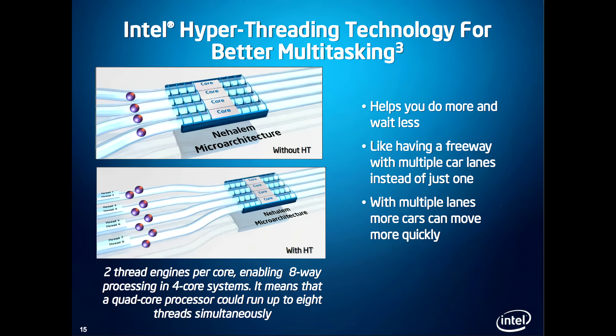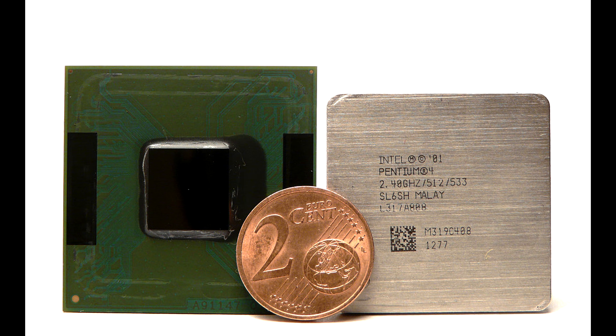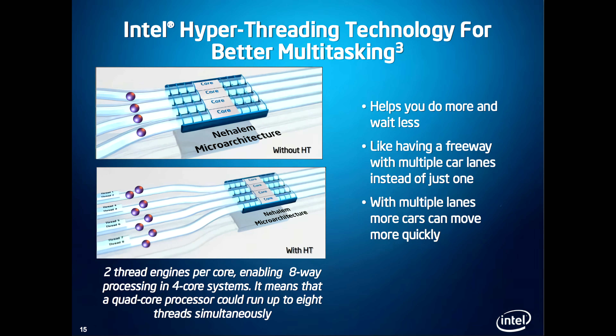Intel's hyper-threading technology has been around for many years. It was first introduced in 2002, making its debut with the Intel Pentium 4 processor, which was part of the Northwood core-based family. However, hyper-threading wasn't a feature available with the Core 2 family of CPUs because they were actually a derivative of the older P6 micro-architecture. Once Intel released Nehalem in 2008, hyper-threading made its return and has been featured on multiple CPUs in the following generations.